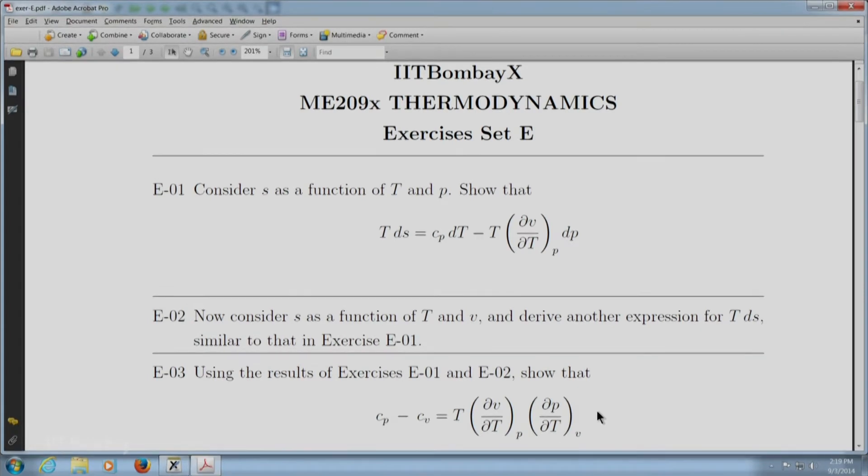So we know that CP requires the variation of H, CV requires the variation of U, but the difference in case of a general fluid happens to be a function only of P, V and T. Let us proceed.